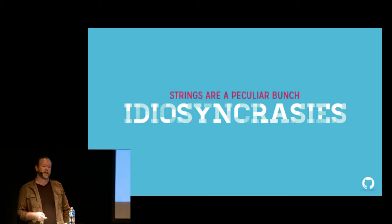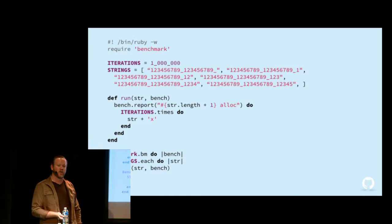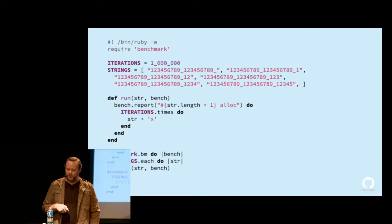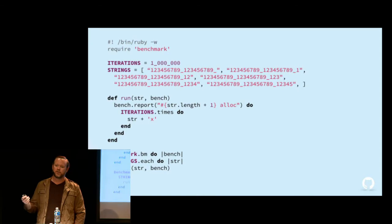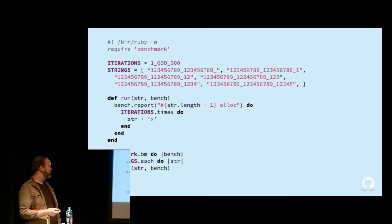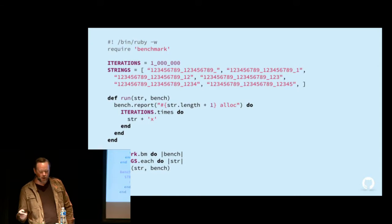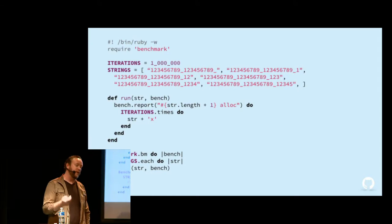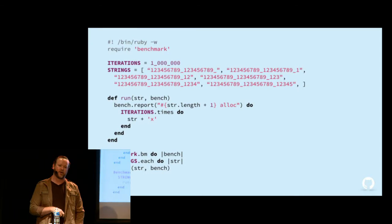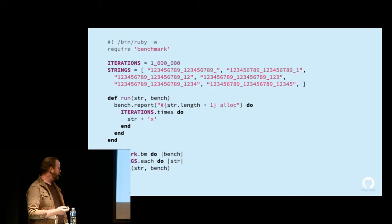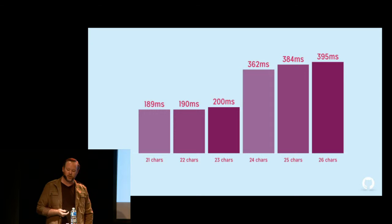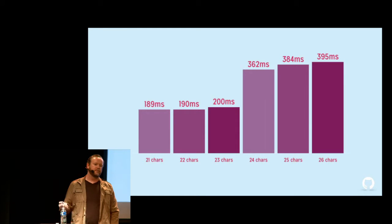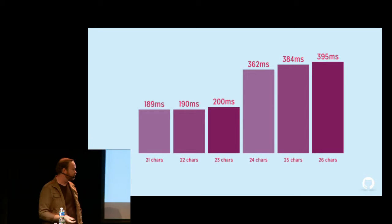There are a couple idiosyncrasies about strings that give us clues. The first was made popular by Pat Shaughnessy about a year and a half ago. We start with strings ranging from 20 to 25 characters, iterate over them, and return them about a million times each — measuring how long it takes. We add an X to the end each time because Ruby tries to do a shared string if you return exactly the same thing. The results: 21 through 23 characters average about 200 milliseconds, but at 24 characters and above we jump another 160 milliseconds. So why is that?